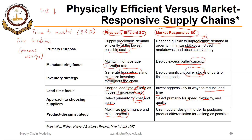In a responsive supply chain, modular design may be used — as seen with differentiation strategy — in order to postpone product differentiation as long as possible.